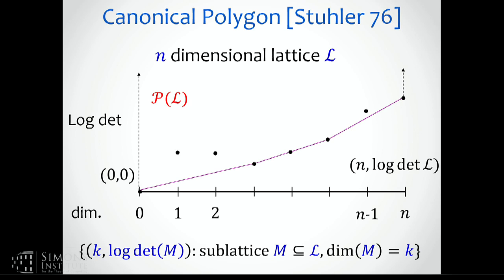Now I'm going to mention a tool that I also know many of us are not familiar with — I wasn't familiar with it a few years ago. It's an amazingly useful concept that is essentially going to give us a canonical way of decomposing a lattice into almost orthogonal blocks. This tool is called the canonical polygon.